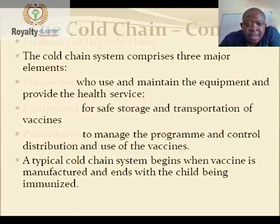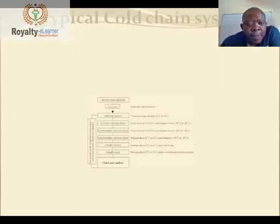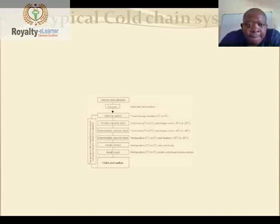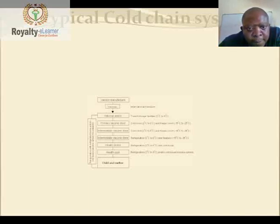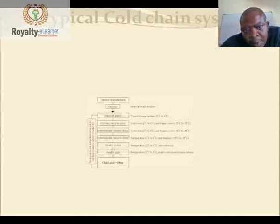A typical cold chain system begins when vaccines are manufactured and ends with the child being immunized. It is important to know how the vaccine moves from the manufacturer to the child being immunized without disturbing the potency of the drug.